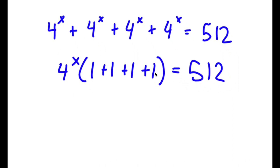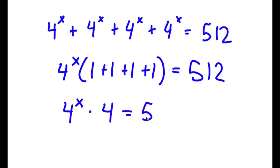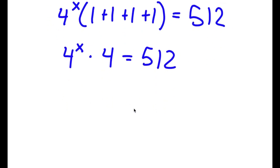Now I'm going to rewrite 1 plus 1 plus 1 plus 1 as 4. So now I have 4 to the power of x times 4 is equal to 512.